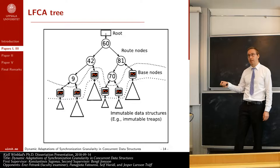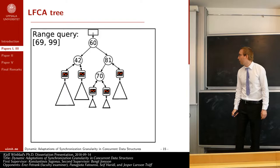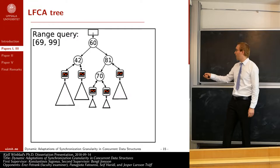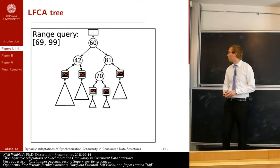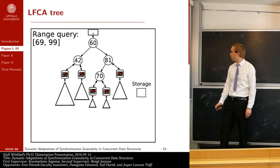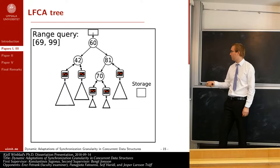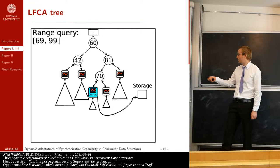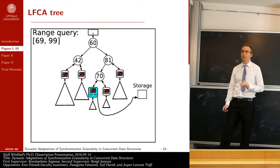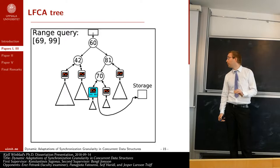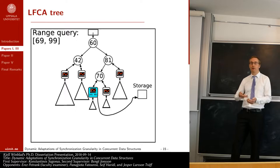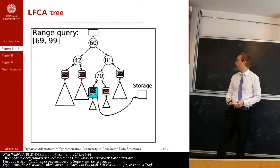I will illustrate this by showing how the LFCA tree performs range queries. For a range query over 69 to 99, the first thing it does is create a storage node. It then searches for the first key in the range and arrives at a base node, which it replaces with a special type of base node. This new special base node becomes irreplaceable — update operations cannot replace it. When update operations encounter this node, they must instead help the range query complete, using the information contained in the special base node.